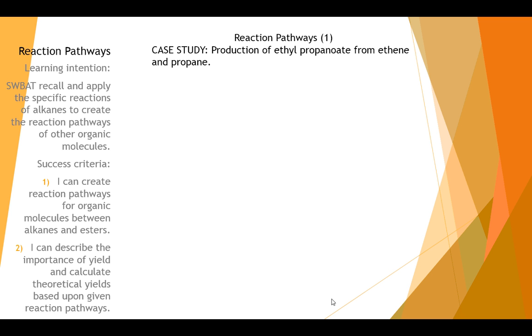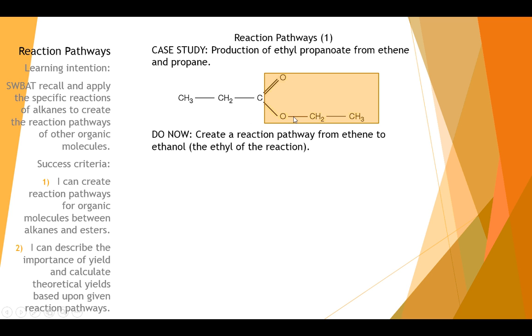So let's get back to the reaction pathway, something that you need to practice. And in your textbooks, where I want you to have them closed for now, make sure you close your textbooks from here on in, until I tell you to open them again. We're going to look at how we produce ethyl propanoate. It's going to be an ethyl and a propanoate group from ethene and propane. So propane is going to make the propanoate bit. Ethene is going to be the ethyl bit. How are we going to do it? What I want you to do is I want you to create a reaction pathway from ethene to ethanol. Start off with ethene, finish off with ethanol. What are the reactions you're going to have in between? Pause the video, and then when you're done, press play.